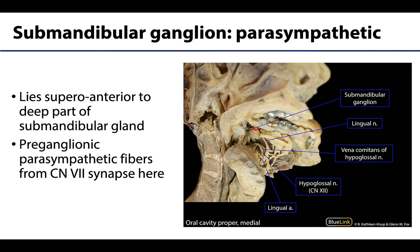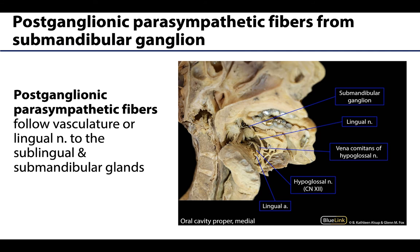The preganglionic fibers make their way into this region to synapse in the submandibular ganglion, which lies superior and anterior to the deep part of the submandibular gland and is loosely associated with the lingual nerve running nearby. From the ganglion, the postganglionic parasympathetic fibers head to their target organs — the salivary glands in this region — either by traveling near the surrounding vasculature or by hitchhiking again with the lingual nerve to reach more distal areas such as the sublingual gland and smaller salivary glands.